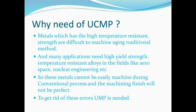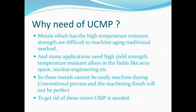Why do we use unconventional machining? Metals with high strength and high temperature resistance are difficult to machine using conventional machining. So we use unconventional machining methods. Many applications need high yield strength, temperature-resistant alloys in fields like aerospace and nuclear engineering. These metals cannot be easily machined in conventional processes, and the machine finish will not be perfect in conventional machining.